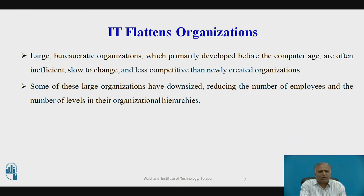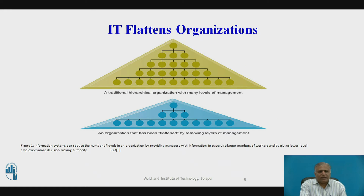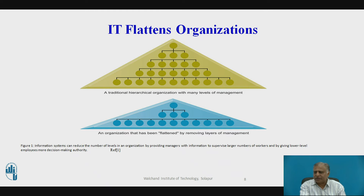Large bureaucratic organizations, which primarily developed before the computer age, are often inefficient, slow to change, and less competitive than newly created organizations. Some of these large organizations have responded by reducing the number of employees and the number of levels in their organizational hierarchies. IT flattened organizations means an organization that has been flattened by removing layers of management, thereby reducing the number of hierarchies. The information system can reduce the number of levels in an organization by providing managers with information to supervise a large number of workers and by giving lower-level employees more decision-making authority.